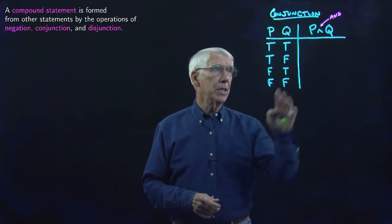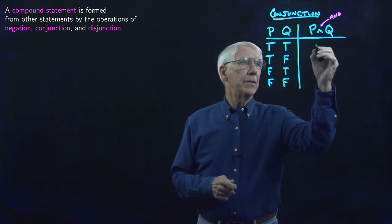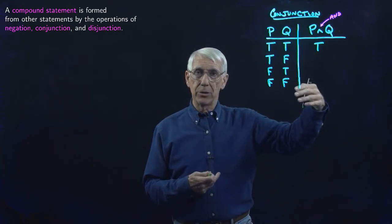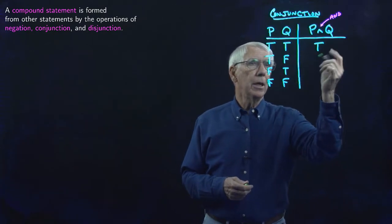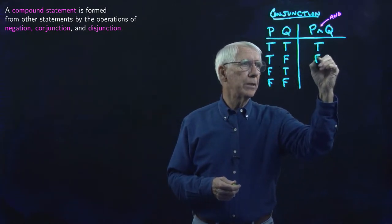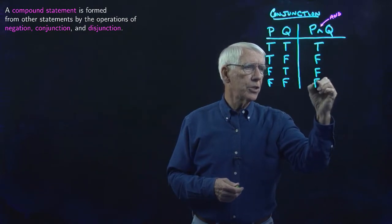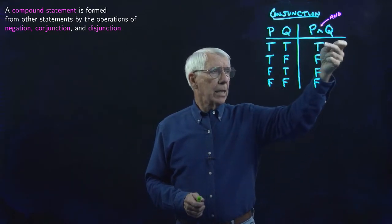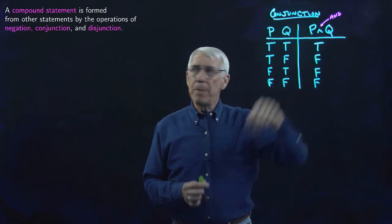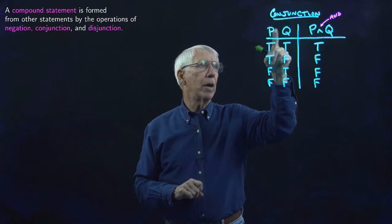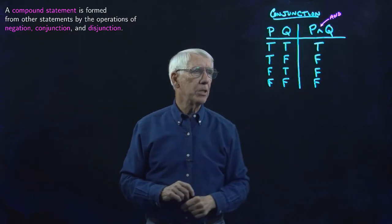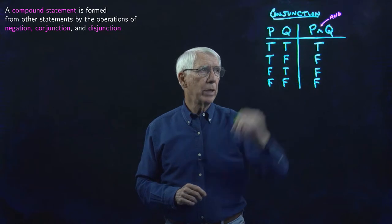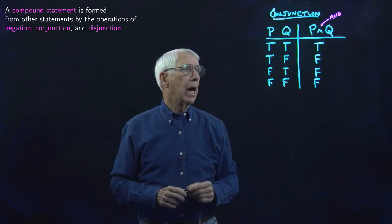The actual definition of the truth value of conjunction is that it is true when they're both true. Naturally, here they're not both true — one is false — so the conjunction is false. Here the conjunction is false, and here the conjunction is false. So this gives us the truth values of the compound statement formed by the conjunction of these two statements, covering every possible combination of truth values for the two individual statements.